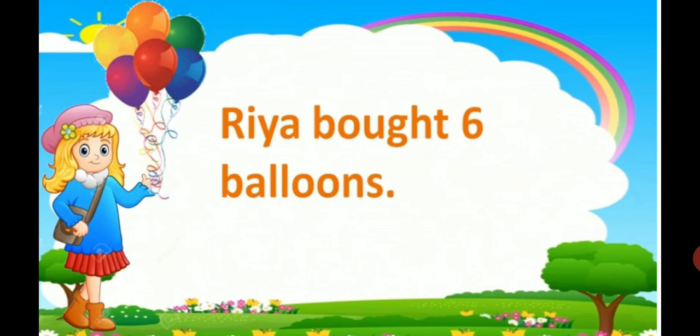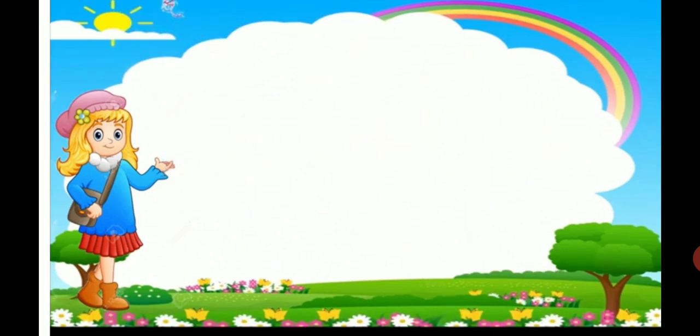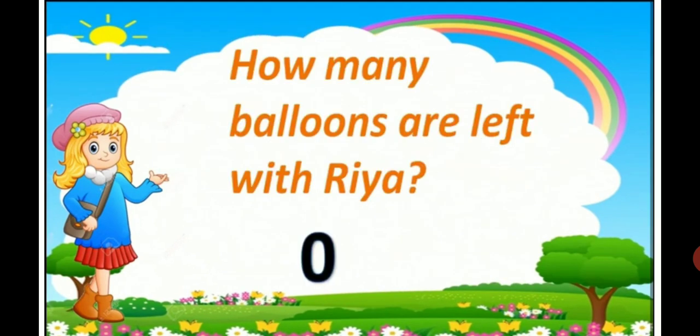All the balloons flew up in the sky. Riya bought six balloons, but now all the balloons are gone. See, Riya is left with zero balloons.